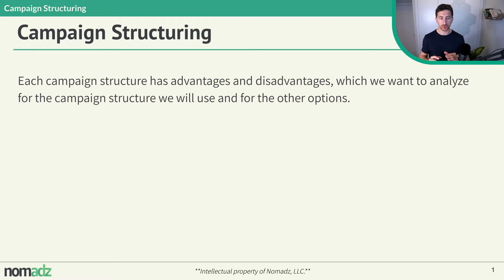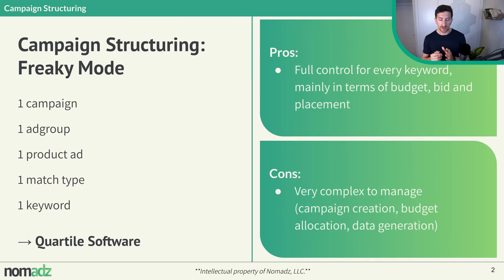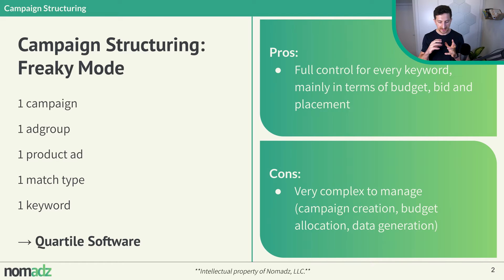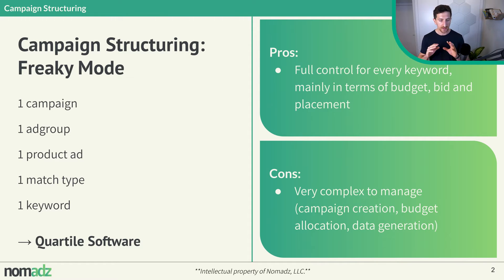Each campaign structure has advantages and disadvantages, and we need to be aware of all of them because if you know the problems, you know how to fix them. The first campaign structure is what a software like Quartile uses to manage PPC: one campaign, one ad group, one product ad, one match type, one keyword. This structure gives you full control over every keyword mainly in terms of budget, bid, and placement.